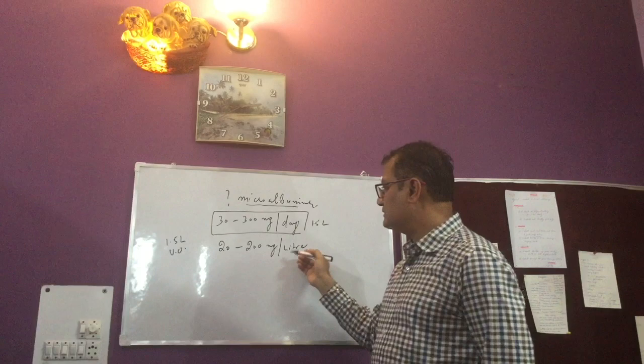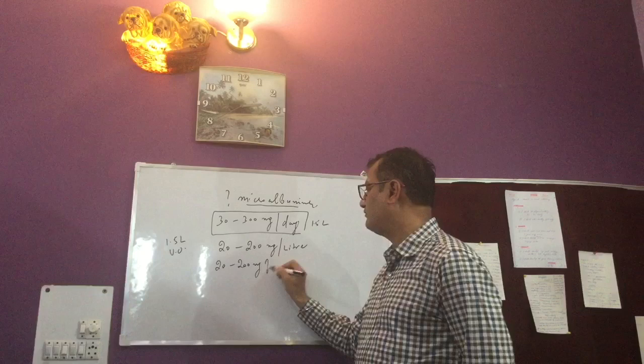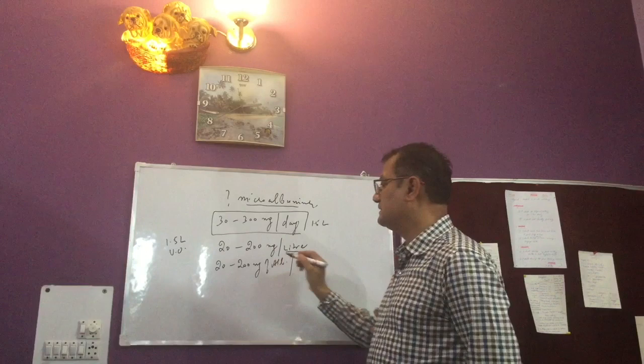Now, again, this is also cumbersome. So we can modify this definition by this way also. Let's see, it is 20 to 200 milligrams of albumin per liter of urine.